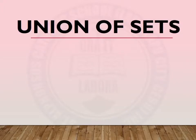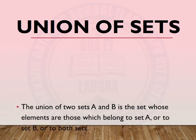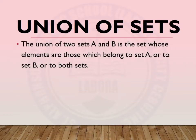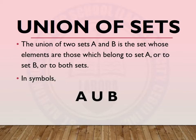Let's talk about union of sets. What is union of sets? The union of two sets, A and B, is a set whose elements are those which belong to set A or to set B or to both sets. In symbols, A union B.